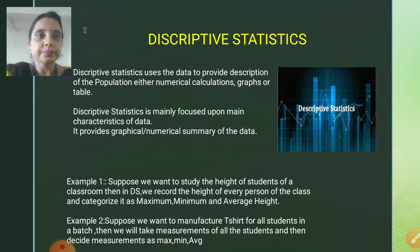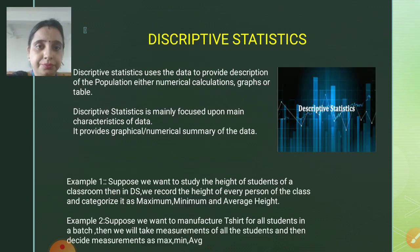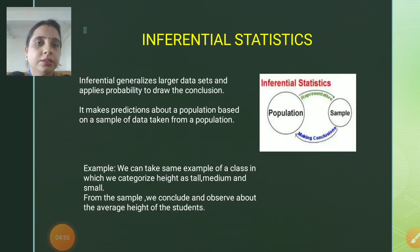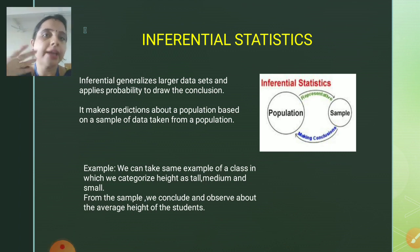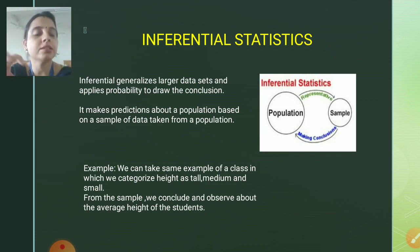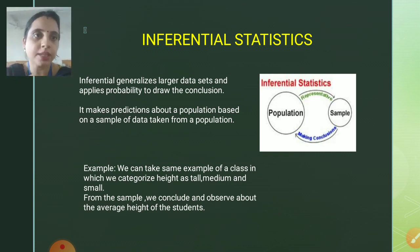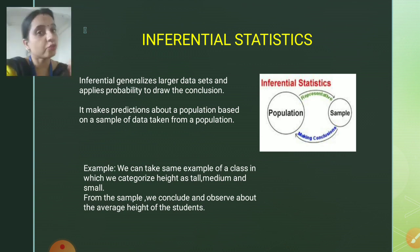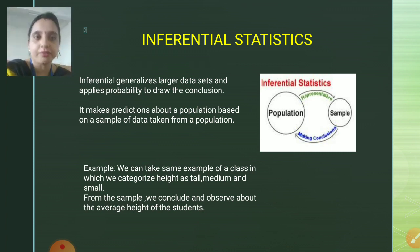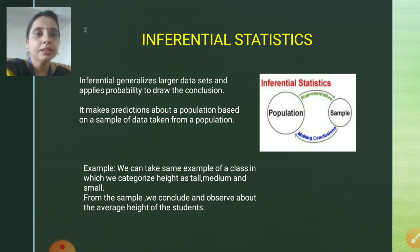Coming on to the next one, that is inferential statistics. You can easily identify or understand with the diagram what it is representing — it is representing a population. A population is the dataset on which we want to do a survey or from which we need to conclude something. From the population, we will be retrieving a sample. A sample is the set extracted from the population, but it should represent the whole population in an efficient manner.